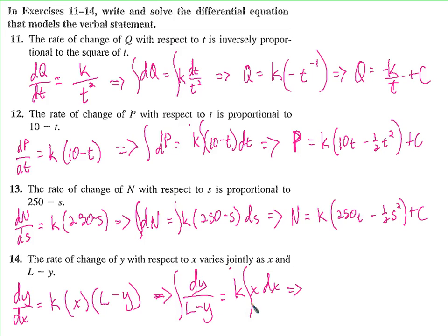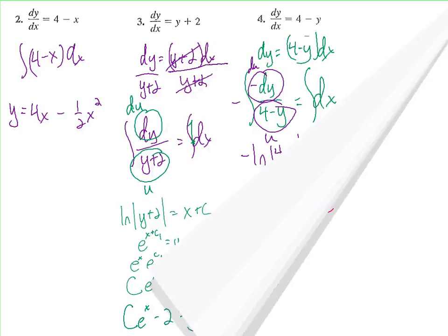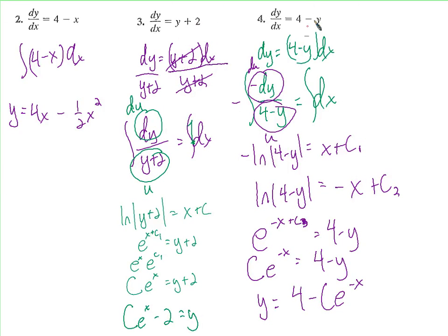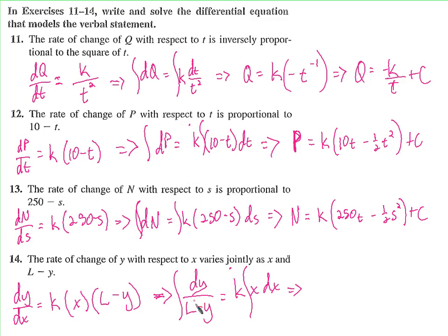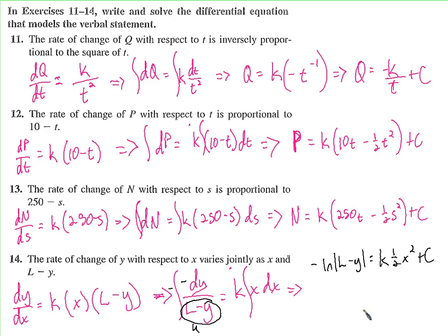The antiderivative of dy over (l minus y) — l is just a constant, so it's like u equals l minus y. The derivative of l minus y is negative dy (zero minus dy), so we put a negative outside. The antiderivative is negative natural log of |l minus y|. On the right side, the antiderivative of k·x dx is k times one-half x squared plus C.